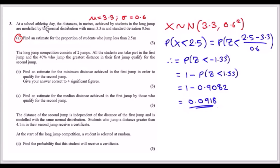At a school athletics day, the distances in meters achieved by students in the long jump are modeled by the normal distribution with mean μ = 3.3 and standard deviation σ = 0.6. We write this as X ~ N(3.3, 0.6²). Part (a): find an estimate for the proportion of students who jump less than 2.5m.